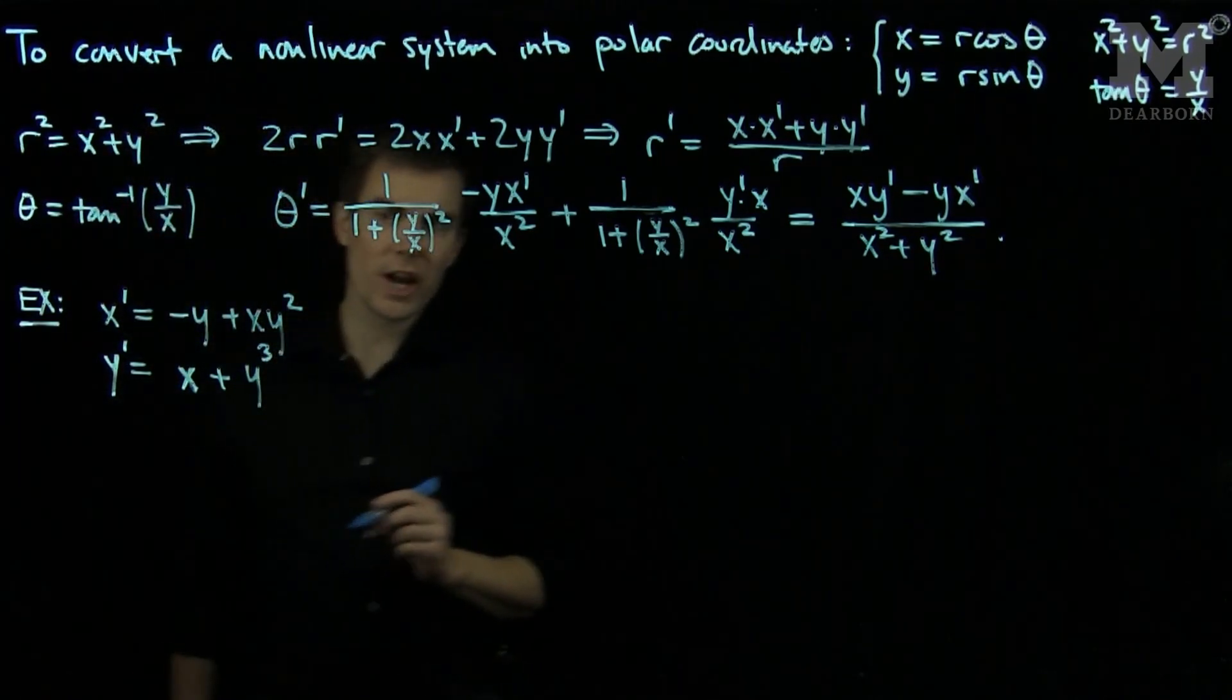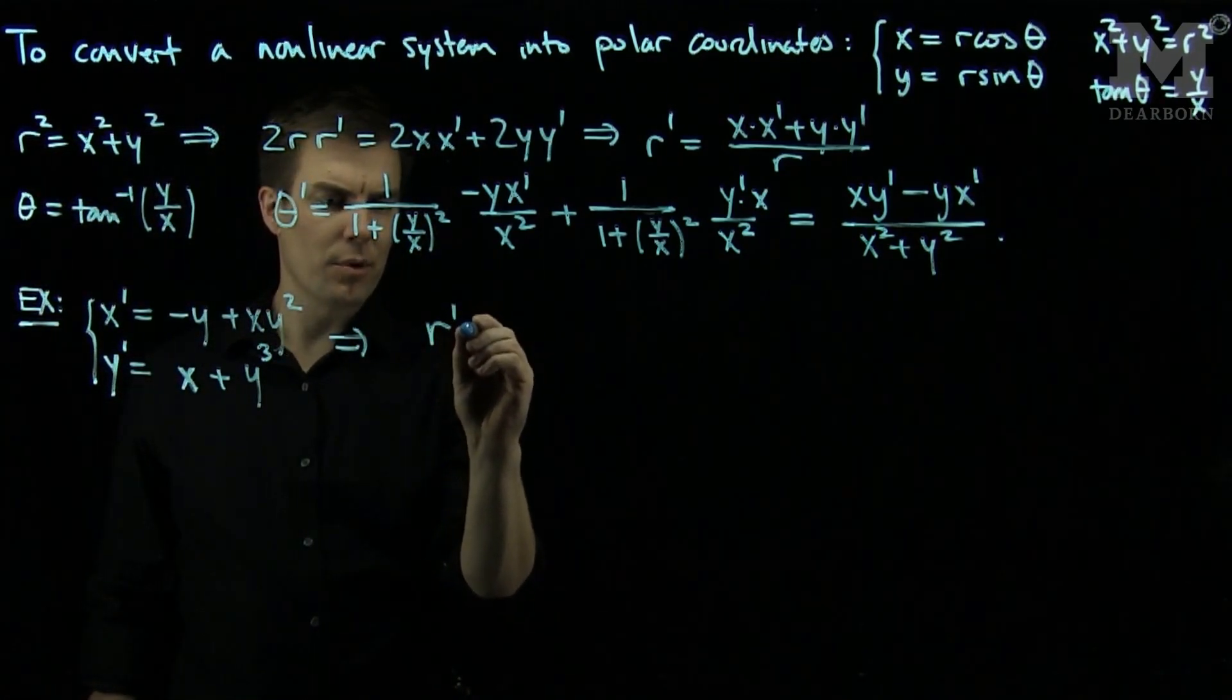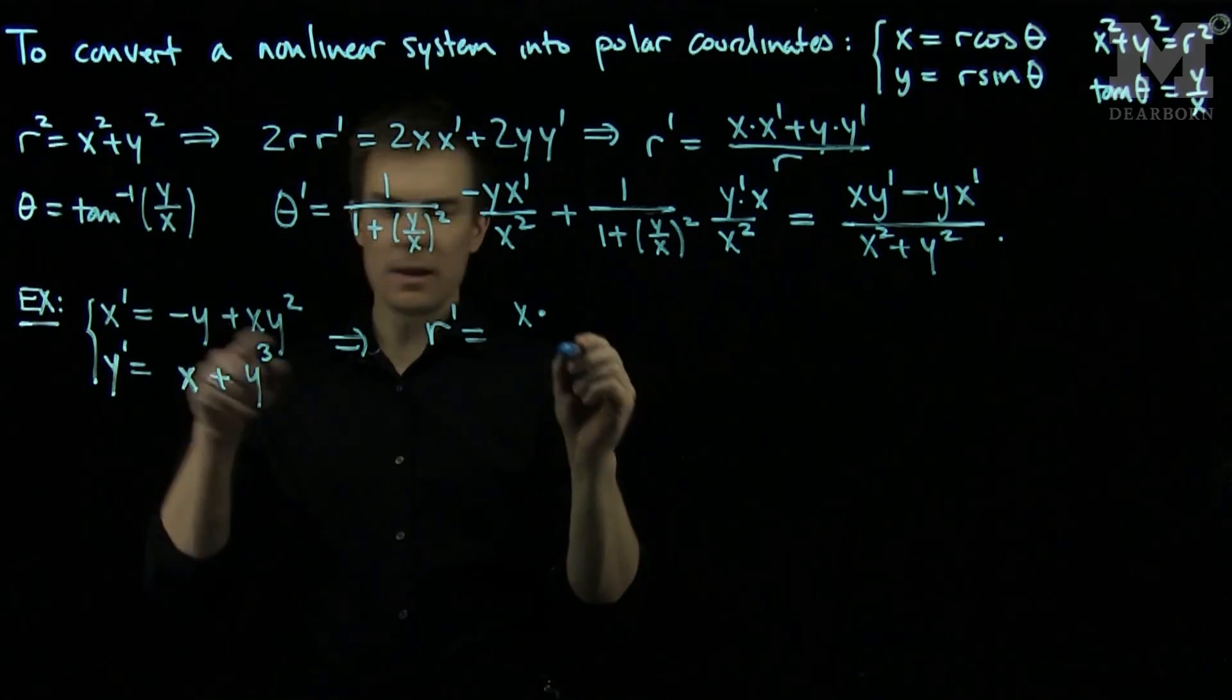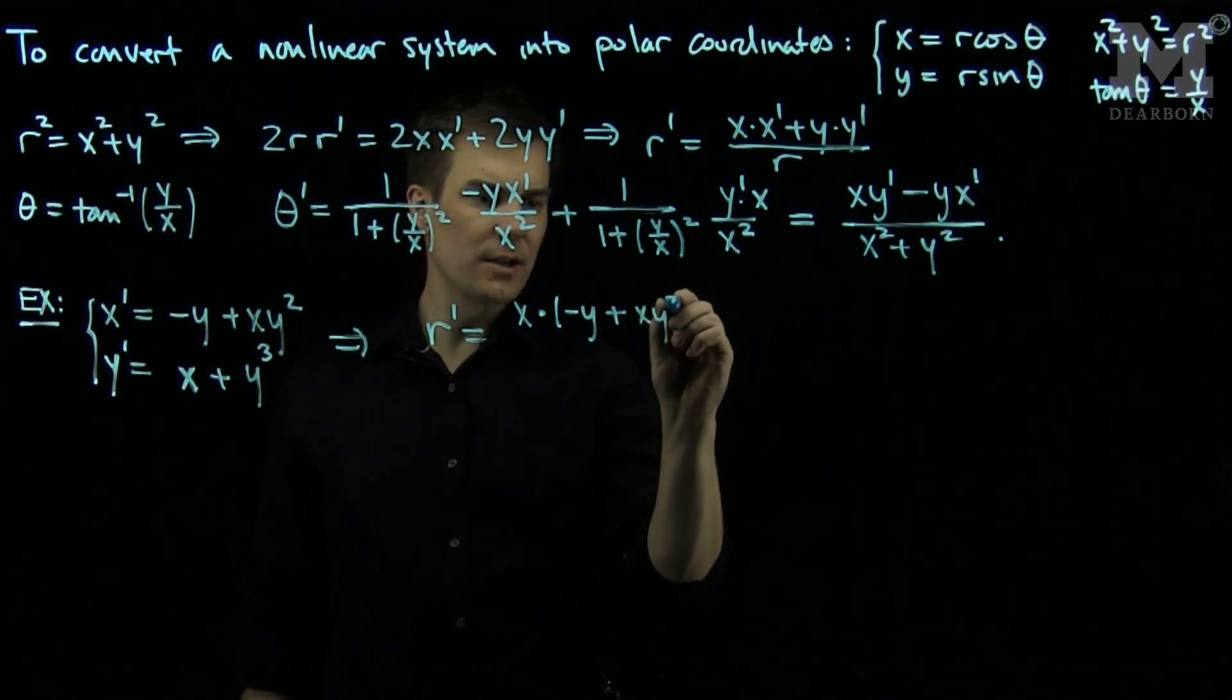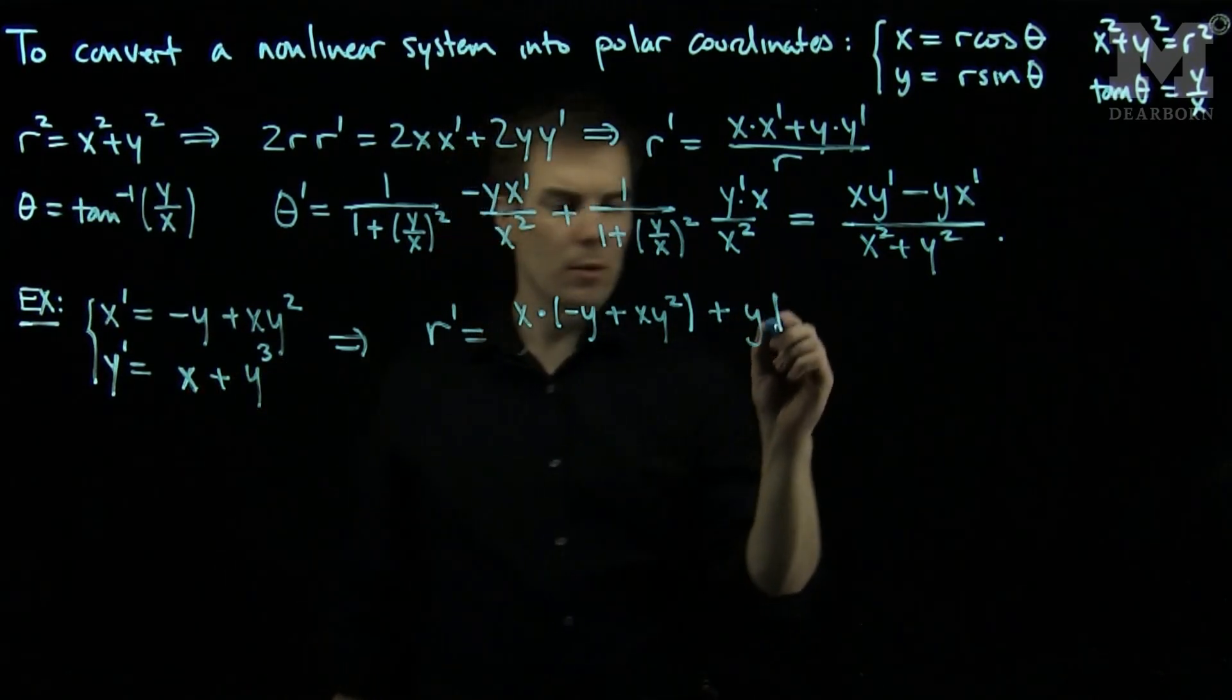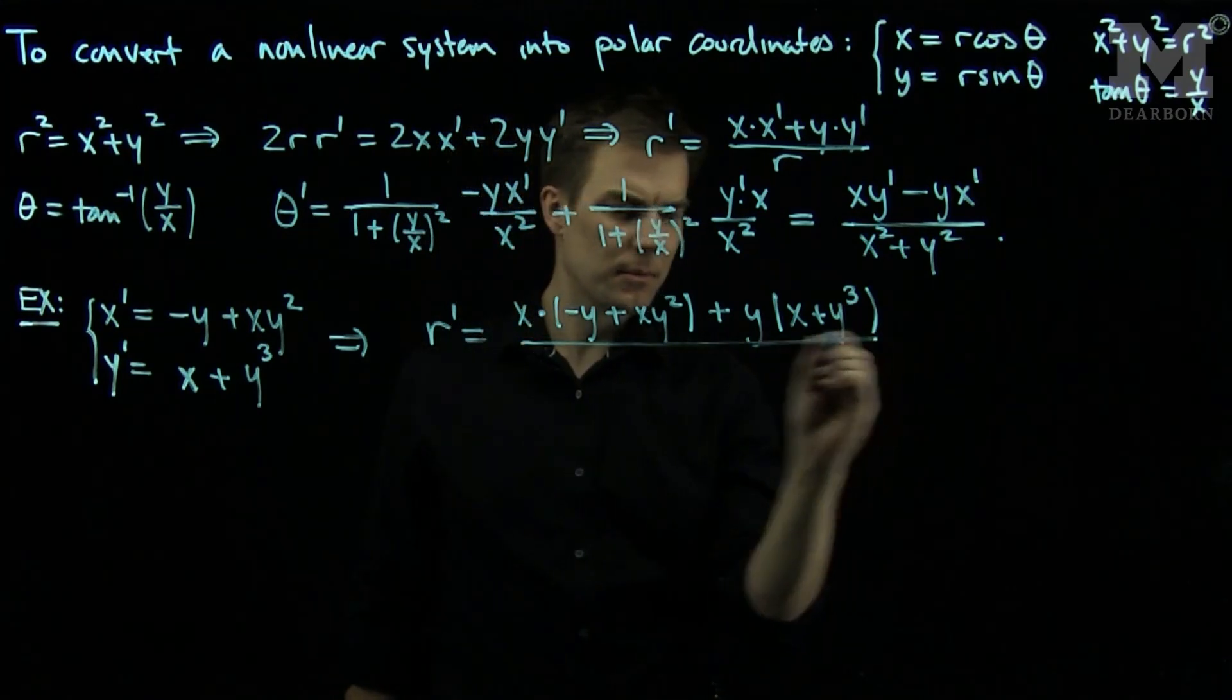I will change this system into polar coordinates. In polar coordinates, I will have r prime equals x times x prime, but x prime will be negative y plus x y squared, plus y times y prime, which is x plus y cubed, and this will all be divided by r.